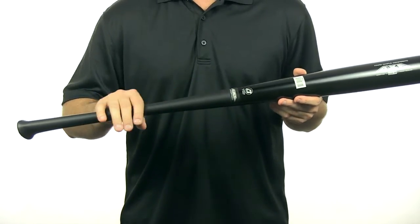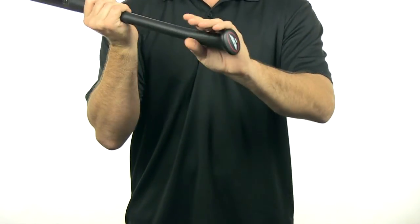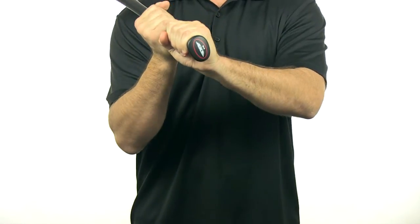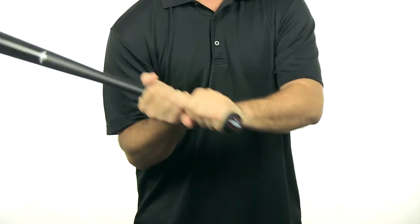Thin taper here with a thin handle and also features the Axe handle at the knob which puts your hands in place and really gets you to swing the bat through the zone.